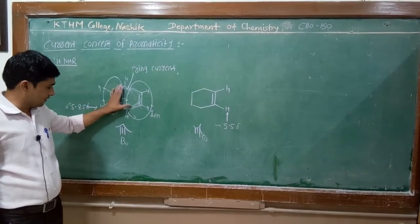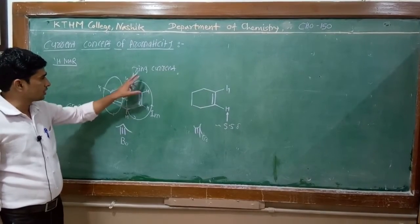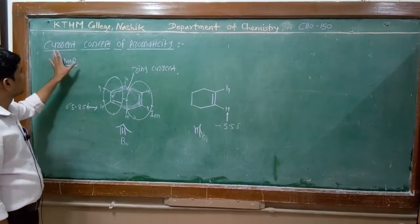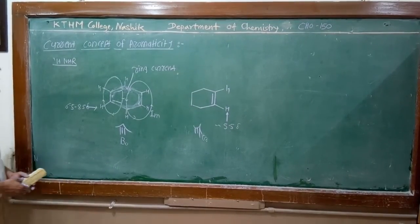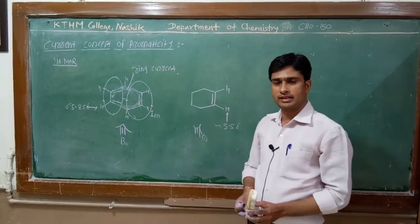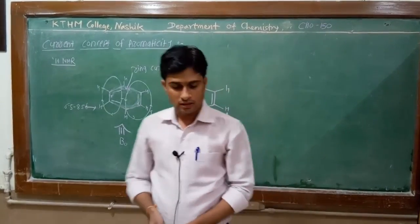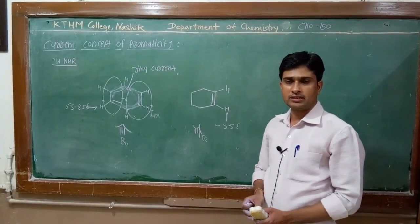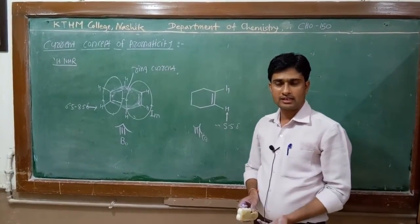If any compound exposed to the applied magnetic field shows formation of ring current, then we can say that the compound is aromatic. This is the ring current concept of aromaticity. All these lectures — about five lectures — are on the aromaticity chapter, and I hope all of you understood all concepts related to aromaticity. The problems on aromaticity will be discussed in the next lecture. Thank you.